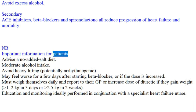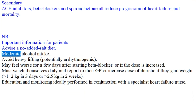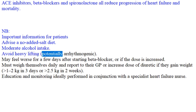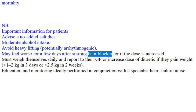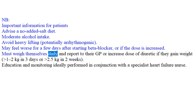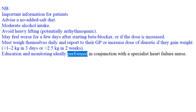Important information for patients: advise a no-added-salt diet; moderate alcohol intake; avoid heavy lifting (potentially arrhythmogenic). Patients may feel worse for a few days after starting a beta blocker or if the dose is increased. They must weigh themselves daily and report to their GP or increase their diuretic dose if they gain 1–2 kg in three days or greater than 2.5 kg in two weeks. Education and monitoring should ideally be performed in conjunction with a specialist heart failure nurse.